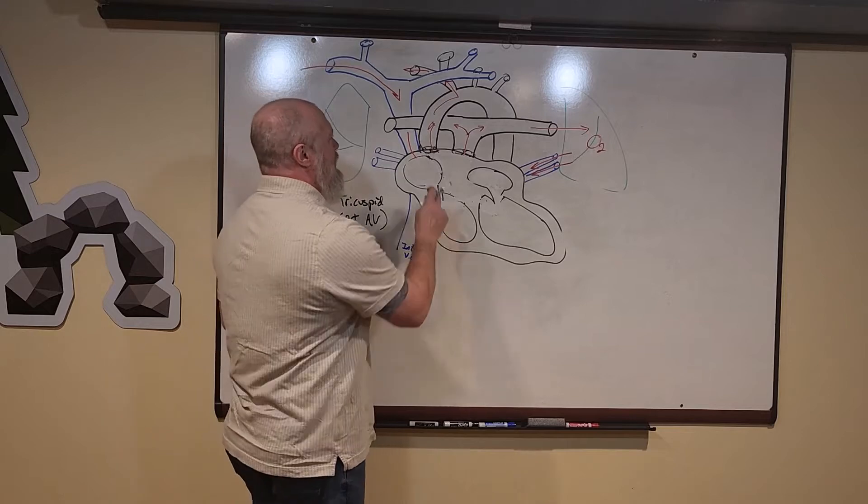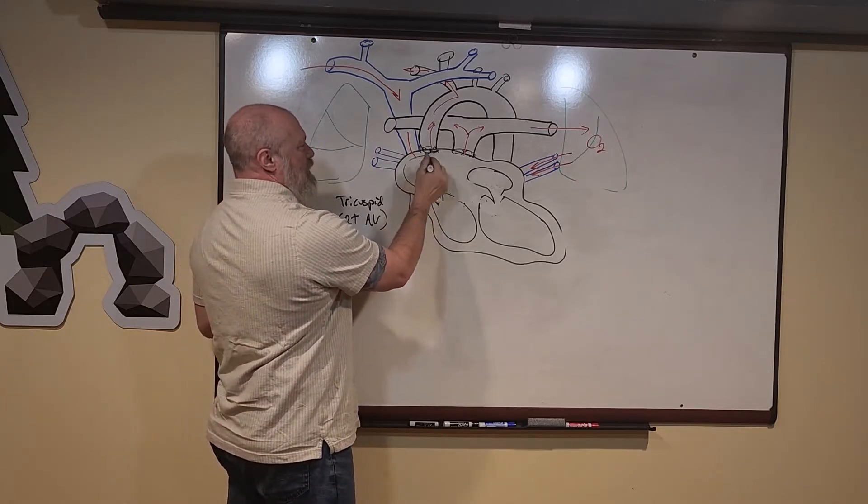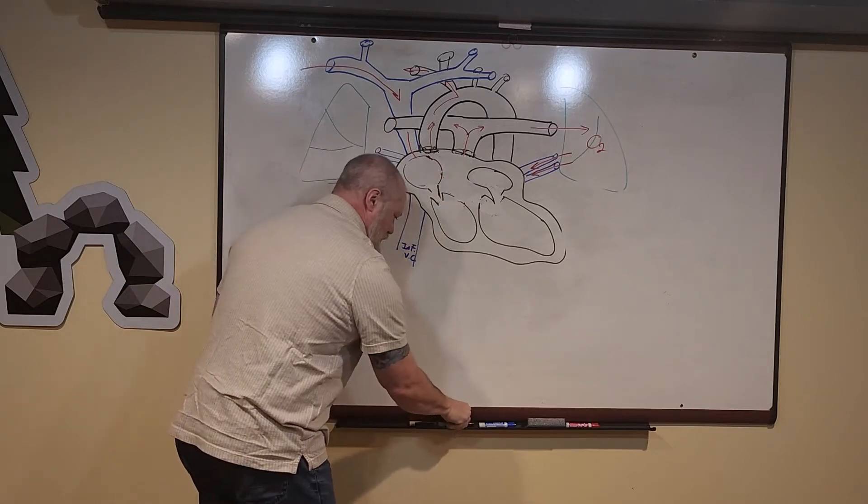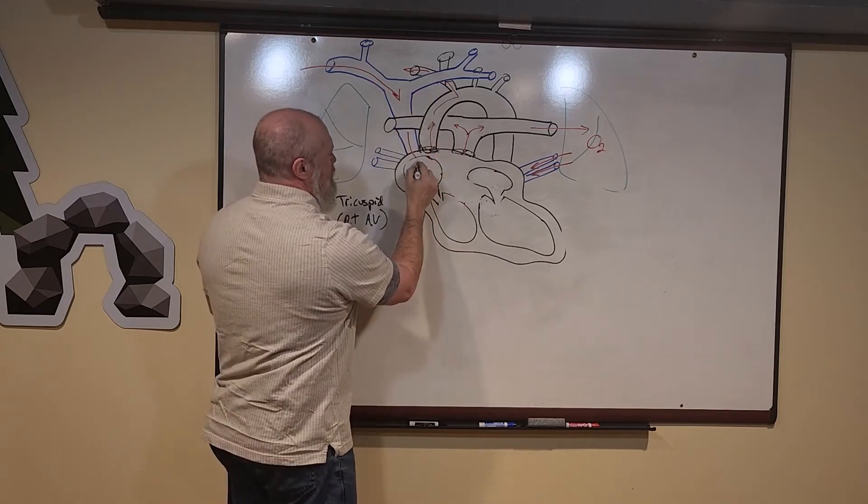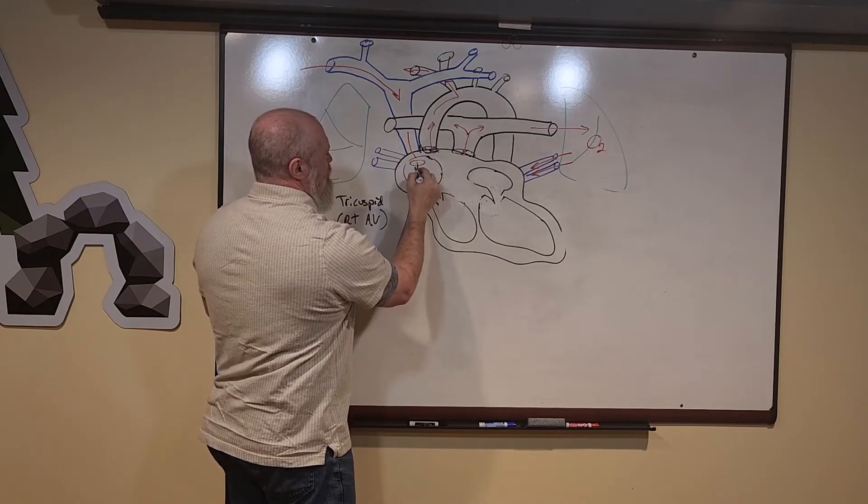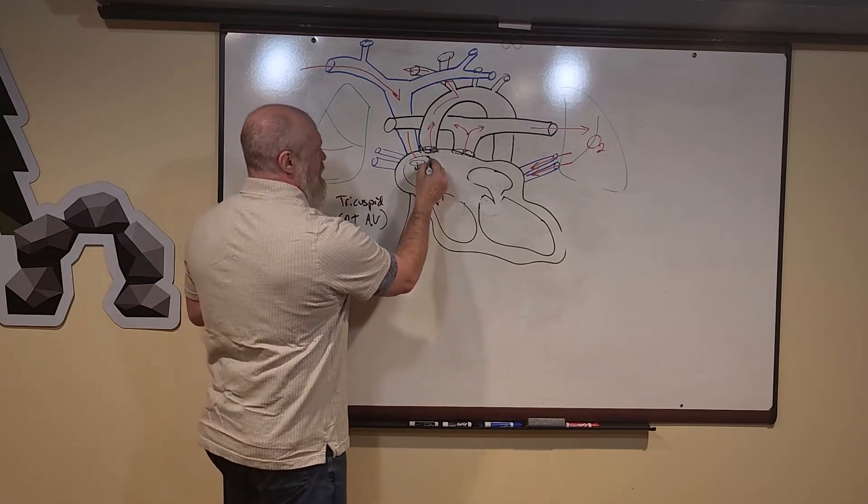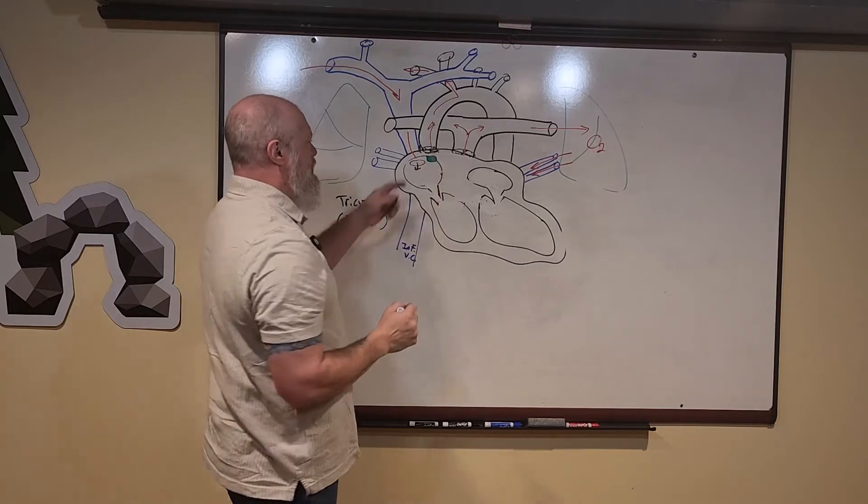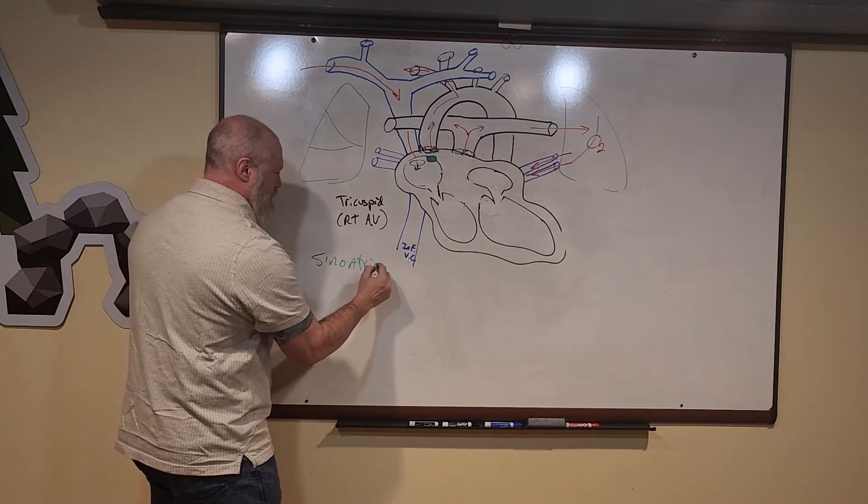This has to be coordinated. Here in the wall of the right atria, kind of where the superior vena cava enters—blood's flowing in, entering the right atria—there's a little node of tissue right here at that junction. That's called the sinoatrial node, sometimes referred to as the pacemaker.